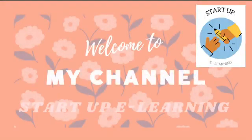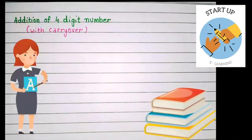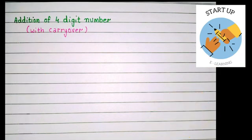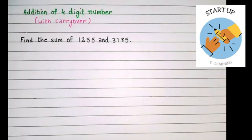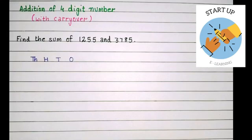Hello everyone, welcome to my YouTube channel Startup E-Learning. Dear children, in this video we will learn addition of four-digit numbers with carryover. To start with this concept, let's find the sum of 1255 and 3785. Before adding it up, let's arrange it according to its places of ones, tens, hundreds, and thousands. First of all we will take